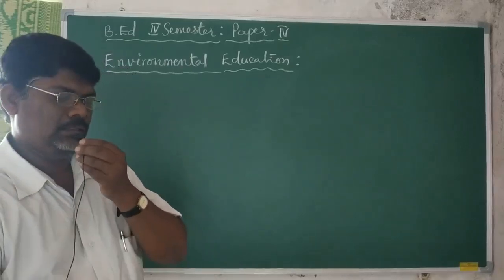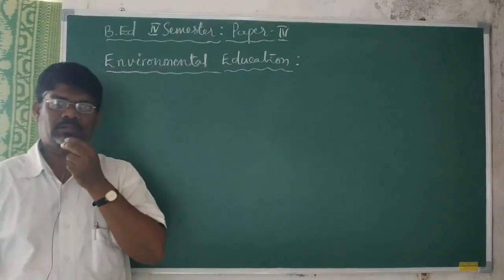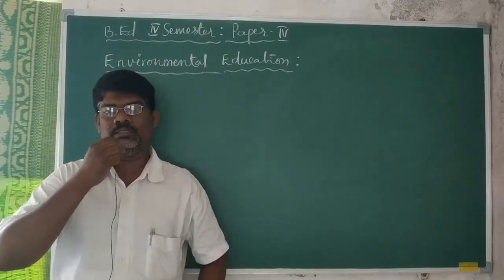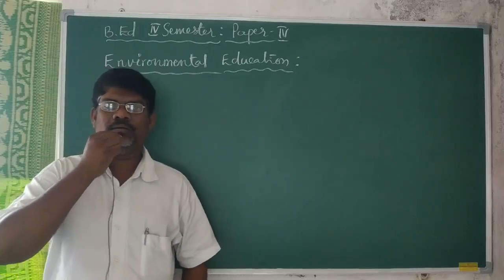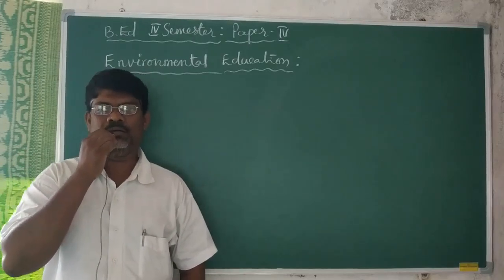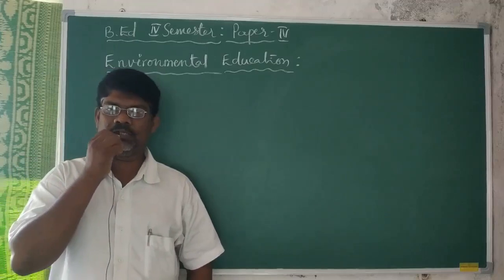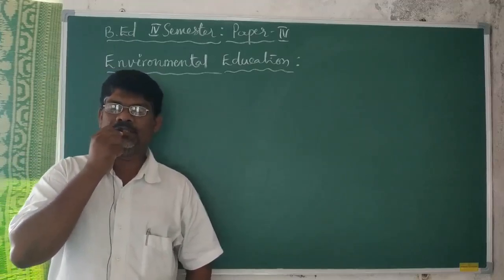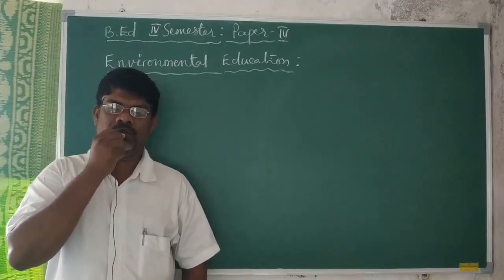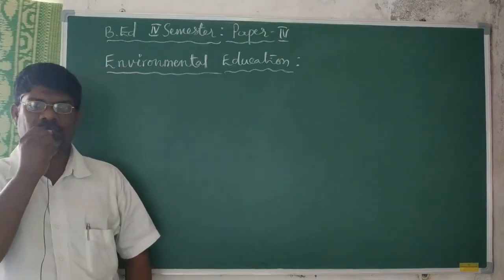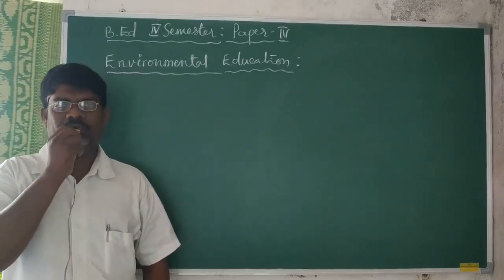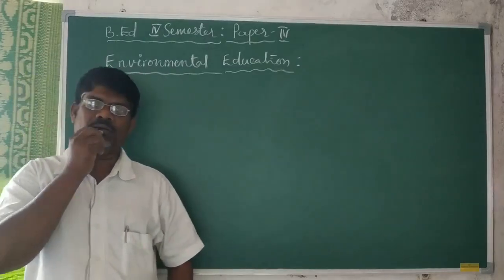We know about the meaning of environment. The term 'environment' means our surroundings. The main components involved in the environment are biotic factors and abiotic factors, which means living things and non-living things. Living things are mainly flora and fauna — different types of animals, plants, microbes, bacteria, virus, and small invertebrates on this earth. These are all called biotic factors or living things.